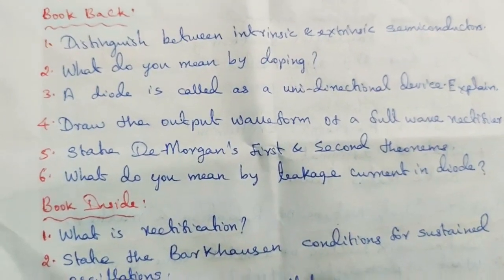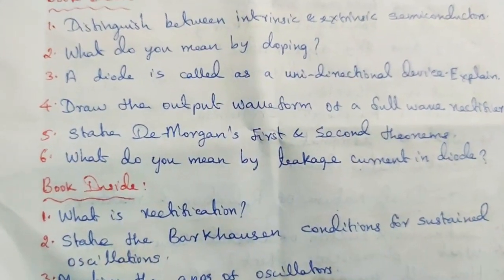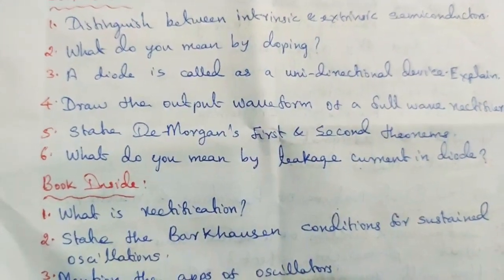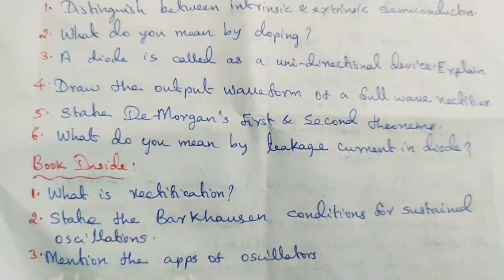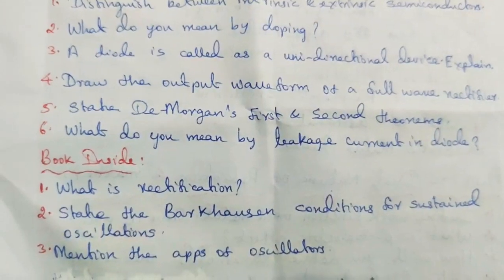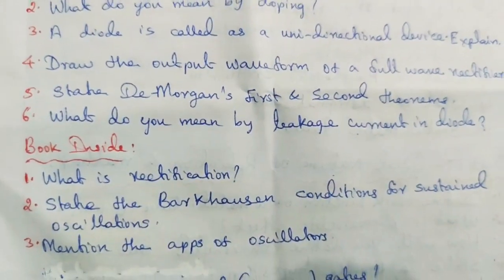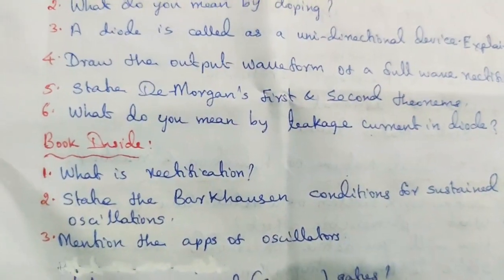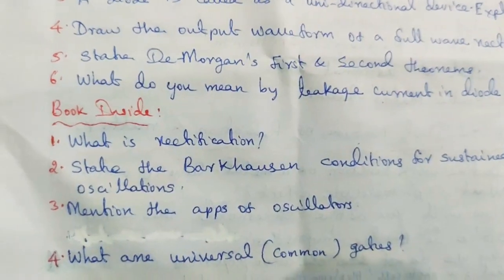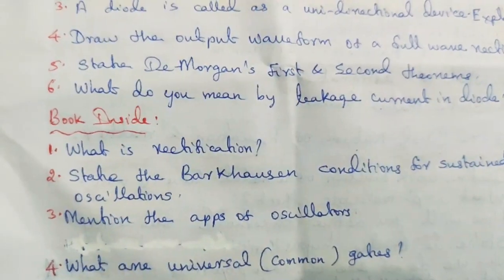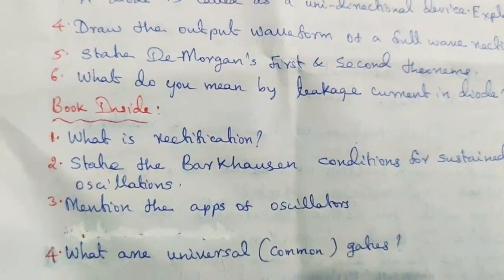Book inside questions: What is rectification? State the Barkhausen conditions for sustained oscillations — mention the applications of oscillators. What are universal or common gates?